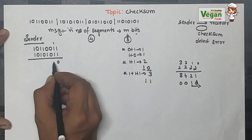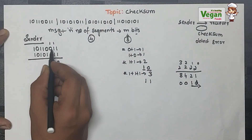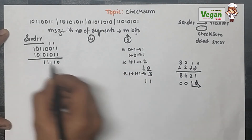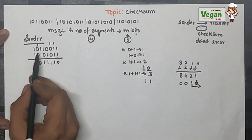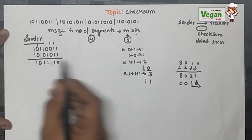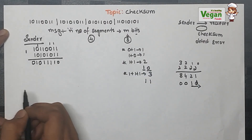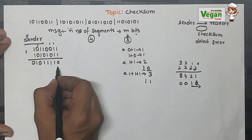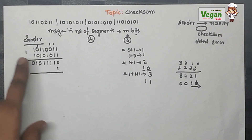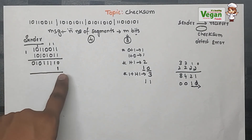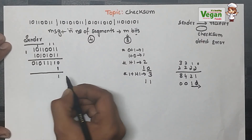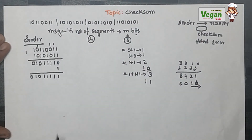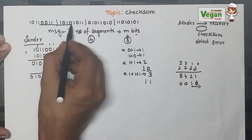So: 1+1+1=3, sum=1, carry=1. Then 1+0+0=1. Then 0+1=1. Then 1+0=1. Then 1+1=2, so sum=0, carry=1. Then 1+0+0=1. Then 1+1=2, sum=0, carry=1. When the leftover carry is 1, we add it to the least significant bit. Adding: 0+1=1, and all others remain the same. Now these two frames are done.